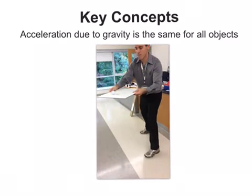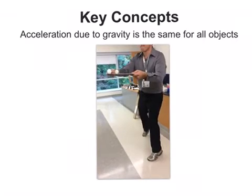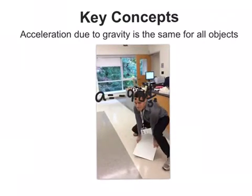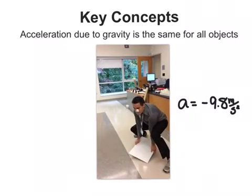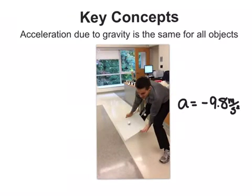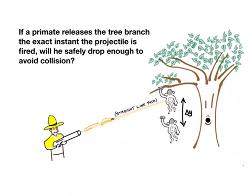Before we begin problem solving, let's go over a few key concepts. Acceleration due to gravity is the same for all objects, no matter what their weight or horizontal motion, and that value is 9.8 meters per second squared downward. And yet we still get questions like these wrong.